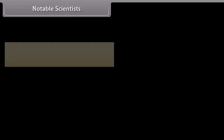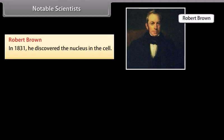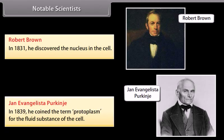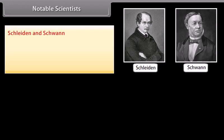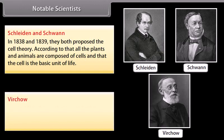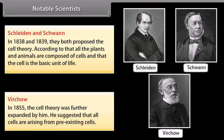Notable scientists: Robert Brown in 1831 discovered the nucleus in the cell. Jan Evangelista Purkinje in 1839 coined the term 'protoplasm' for the fluid substance of the cell. Schleiden and Schwann in 1838 and 1839 proposed the cell theory, stating that all plants and animals are composed of cells and that the cell is the basic unit of life. Virchow in 1855 further expanded the cell theory, suggesting that all cells arise from pre-existing cells.